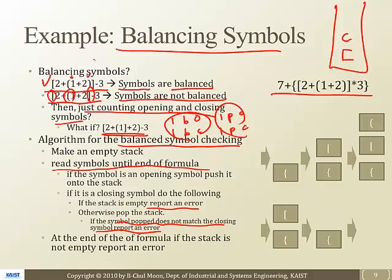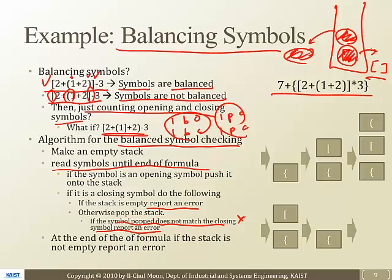So we encounter a closing symbol and we pop the stack. The popped item is the opening parentheses, and we have a closing parentheses — it matches up, so we don't report an error. Then we encounter the closing bracket and pop it — it matches up as well. At the end of the formula, if the stack is not empty, report an error. But since it's been popped, the stack is empty, so it's correct.